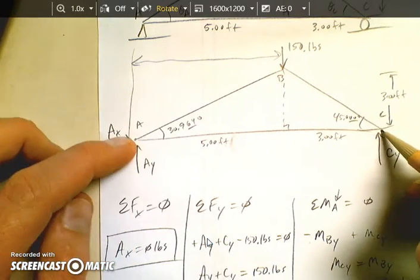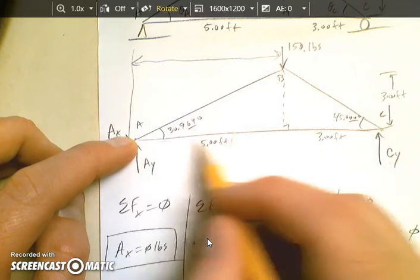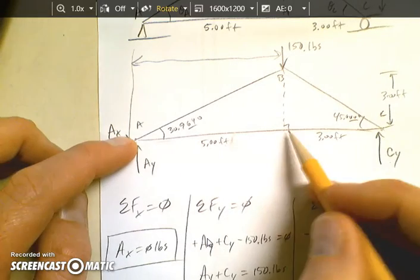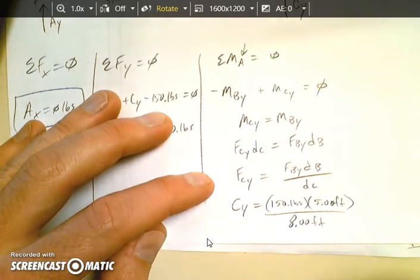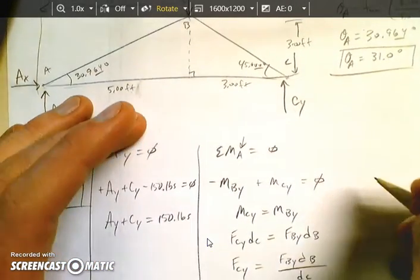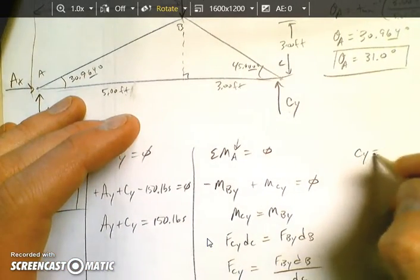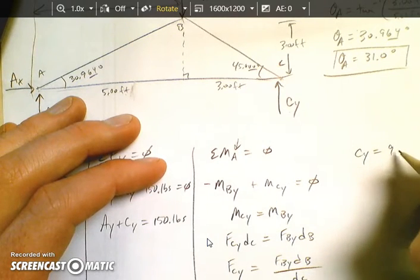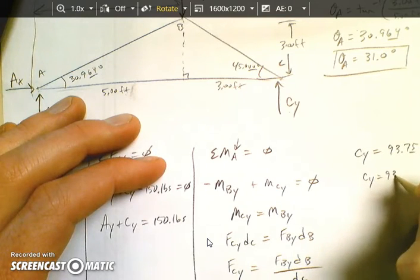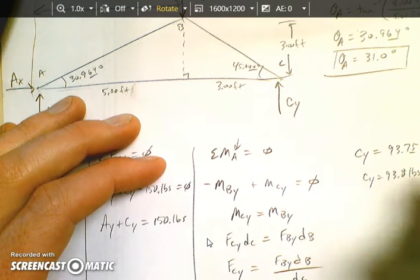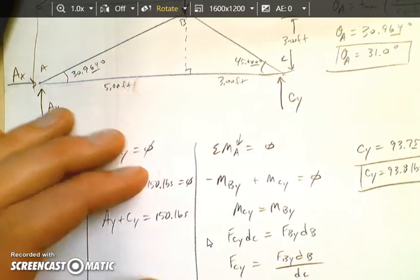Because this is a vertical force. So I want the horizontal distance. I do not want this hypotenuse. So if I'm clicking here and clicking here on Inventor and I'm dragging up and I'm getting the horizontal distance from here to here. That's this 5 feet. So this should be 5.00 feet. What's the distance to C? Well, again, it's a vertical force. So I'm looking for the horizontal distance from there to there. That's 5 feet plus 3 feet. So that is 8.00 feet. I ran out of space here. So I'm going to split it up here. CY is equal to 93.75 pounds.